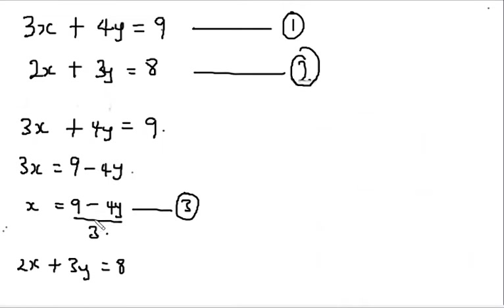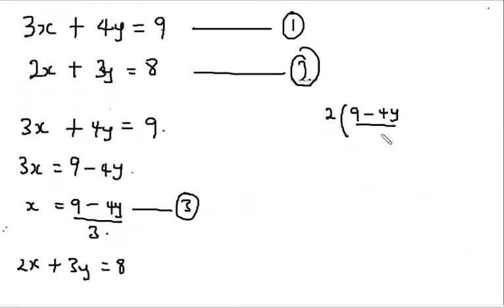The next step is to substitute the value of x from equation 3 into equation 2. So we have 2 times (9 minus 4y divided by 3) plus 3y is equal to 8.